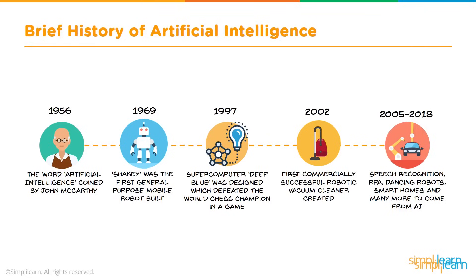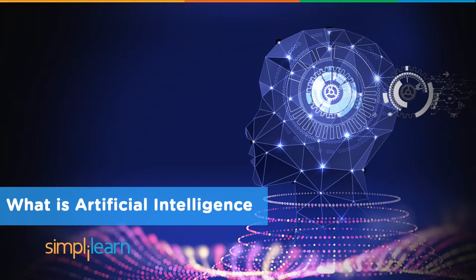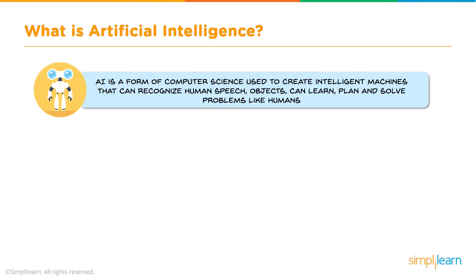We have RPA, dancing robots, smart homes, and many more things coming out almost monthly in the world of Artificial Intelligence. So what is Artificial Intelligence? AI is a form of computer science used to create intelligent machines that can recognize human speech and objects, can learn, plan, and solve problems like humans.